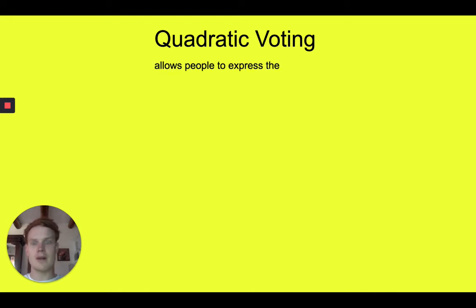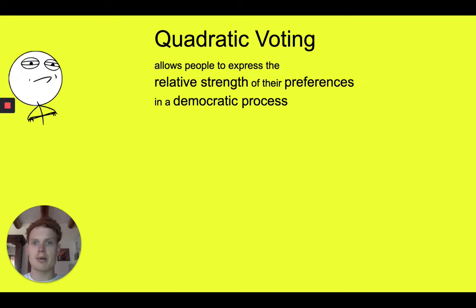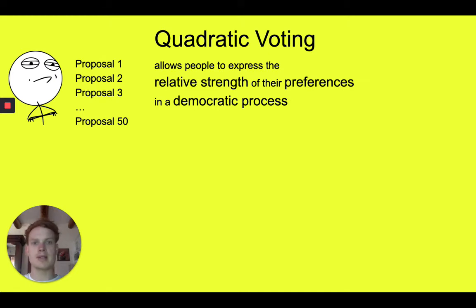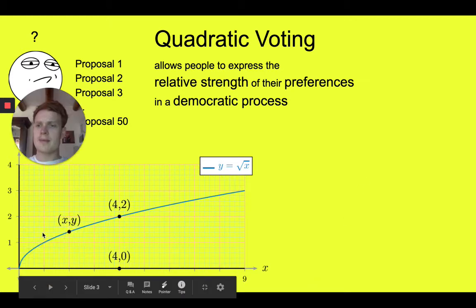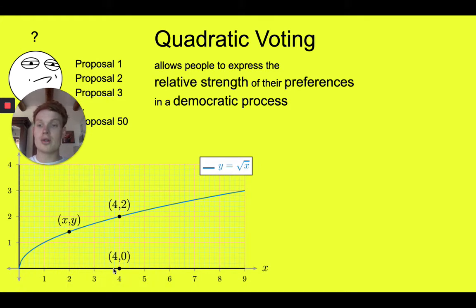So let's start off with quadratic voting. It essentially allows people to express the relative strength of their preferences in a democratic process. So imagine we have 50 different proposals and you want to express your preference among them. We have this quadratic function — you can see it over here at the bottom — and essentially what it maps to is: for every number of voice credits you have, the square root of that is the number of votes you actually get.